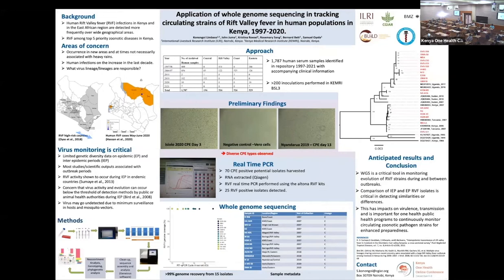On preliminary analysis, all the isolates were found to belong to lineage C, clustering with RVF strains associated with recent outbreaks in Kenya in 2007, Uganda in 2016 and 2017, and Sudan in 2010.